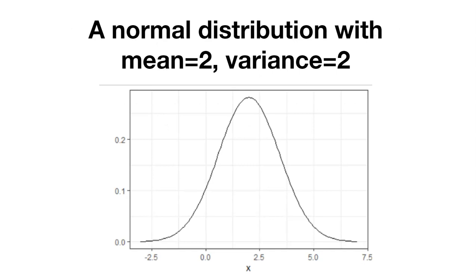How does this compare to the normal distribution? Here we have a normal distribution with a mean of two and a variance of two. You can see the mean, the center of the bell-shaped curve is around two, and it's distributed plus or minus two, which is the variance. Here's our normal bell-shaped curve.